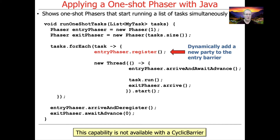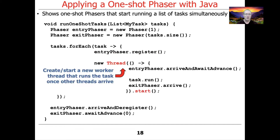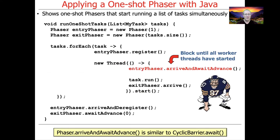The next thing we do is create a new thread for each task, create it and start it. That newly created thread will run the task logic. For each thread we create, we use the entry phaser — created outside the forEach loop — as part of the lambda expression running the code inside the thread. We call the arriveAndAwaitAdvance method on the phaser, which causes that thread to block until all the worker threads have started. This allows all threads to defer their actual running until they're all ready to go, so nobody gets a head start.